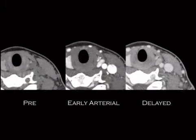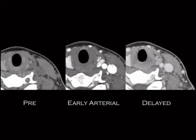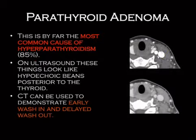We have an enhancing nodule posterior to the thyroid which demonstrates early enhancement and washout on the delayed phase. This is the CT way to diagnose a parathyroid adenoma, which is by far the most common cause of hyperparathyroidism — about 80–90% of cases.